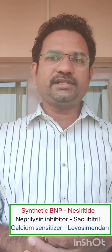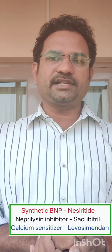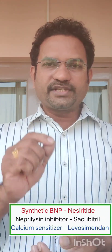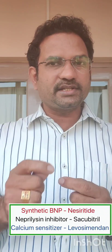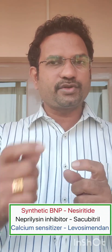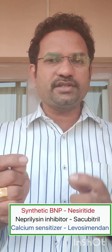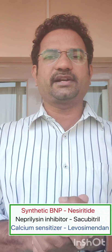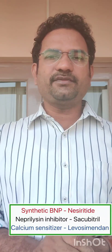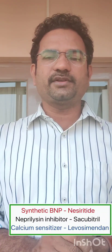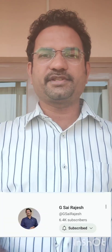The third new drug is a calcium sensitizer — levosimendan. Levosimendan sensitizes actin-myosin towards calcium, causing forceful contractions. This completes the drug treatment of congestive heart failure.